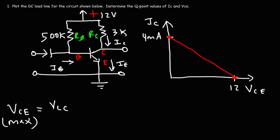And that's how we create the DC load line. The Q-point is any point on that line. Ideally, we want a centered Q-point value, because at that point we can create an amplifier that works the best.